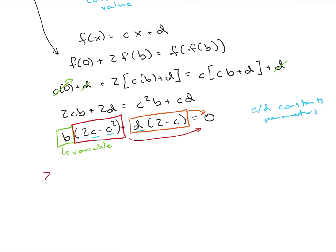So if we look at 2c minus c squared that's equal to 2 minus c times c. So we can see that either c equals 0 or c equals 2.